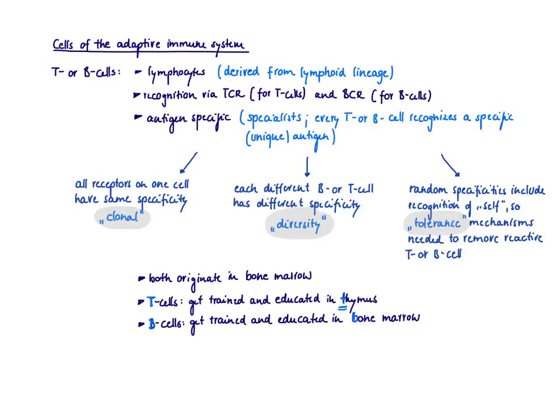So in this video, I want to talk about the cells of the adaptive immune system, which are the T and the B cells.